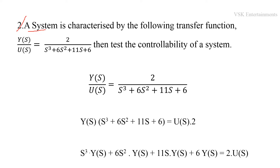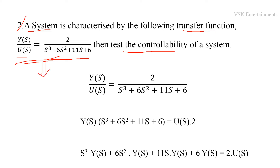Coming to the second problem: a system is characterized by the transfer function Y(s)/U(s) = 2 / (s³ + 6s² + 11s + 6). Test the controllability of this system. The difference between the first and second problem is that in the first problem we directly get the state equation, whereas here we have a transfer function. In this case, we must first derive the state equation from the transfer function.